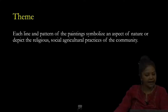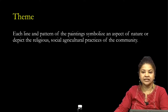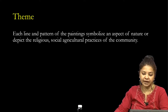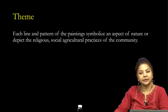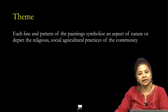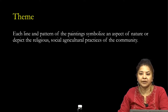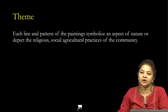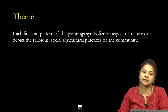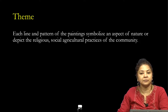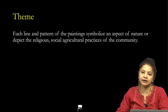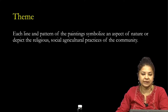Each line and pattern of the painting symbolizes an aspect of nature or depicts the religious and socio-agricultural practices of the community. The Devaru community of Karnataka are very close to nature and this is also depicted in the art form, like many other art forms of India. We have seen previously in Gond art, Warli art, and Madhubani art that artists depict whatever they see around them — same is for Chitra.